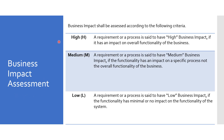Next is business impact assessment, assessed according to the following criteria. High business impact: if the functionality has an impact on the overall functionality of the business — for example, an impact to company revenue or interruption to business transactions which prevents it from proceeding further. Medium business impact: if the functionality has an impact on a specific process, not the overall business, but there is a workaround procedure available to continue that process. Low business impact: if the functionality has minimal or no impact on the functionality of the system.